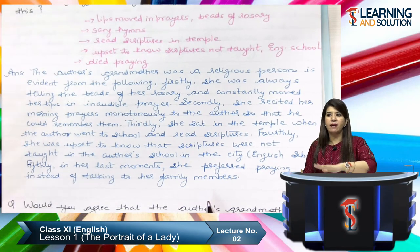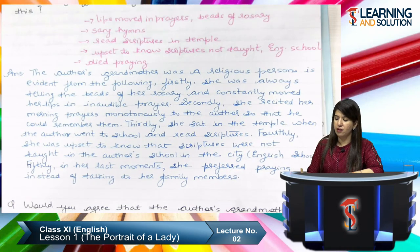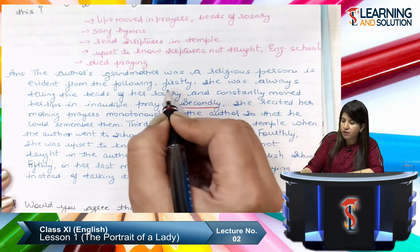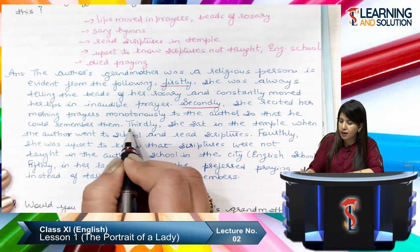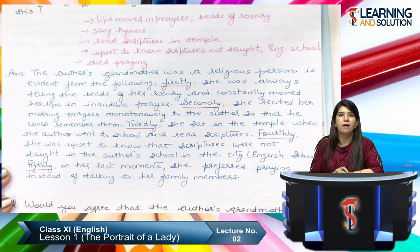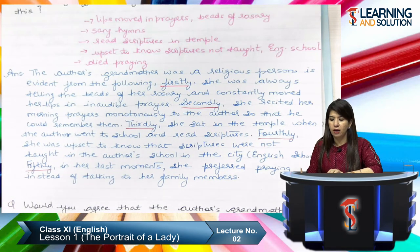Now, putting all these value points together to get our model answer: the author's grandmother was a religious person, as is evident from the following. Firstly, she was always telling the beads of her rosary and constantly moved her lips in inaudible prayer. Secondly, she recited her morning prayers monotonously to the author so that he could remember them. Thirdly, she sat in the temple when the author went to school and read scriptures. Fourthly, she was upset to know that scriptures were not taught in the author's English school in the city. Fifthly, in her last moments she preferred praying instead of talking to her family members.